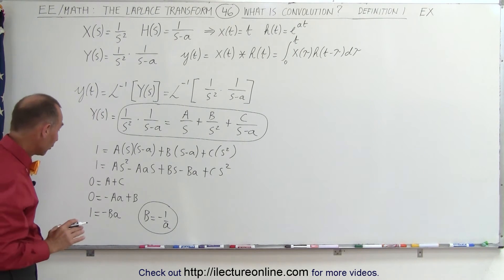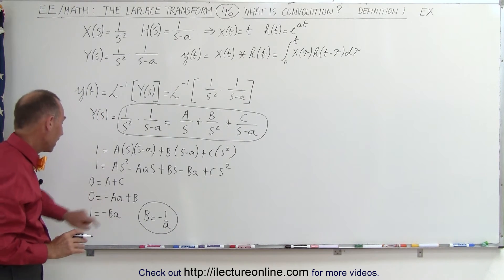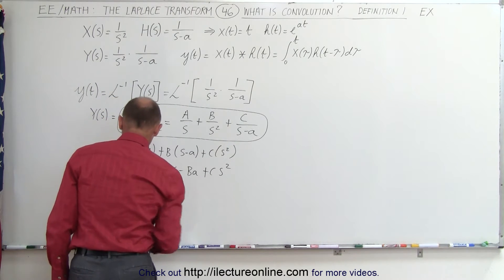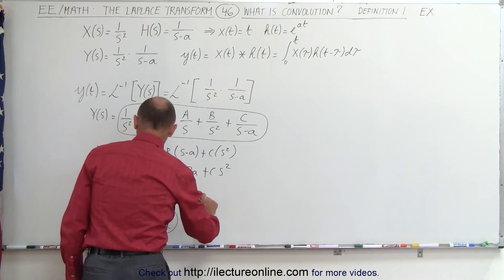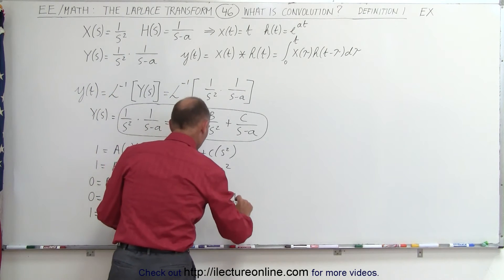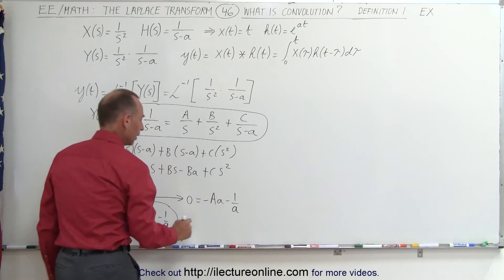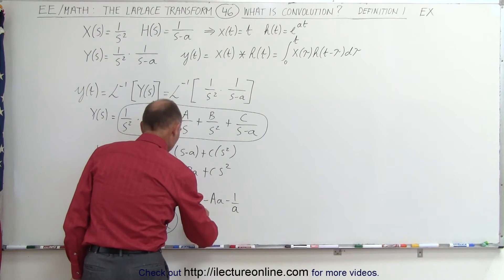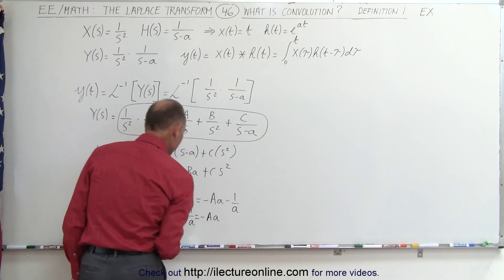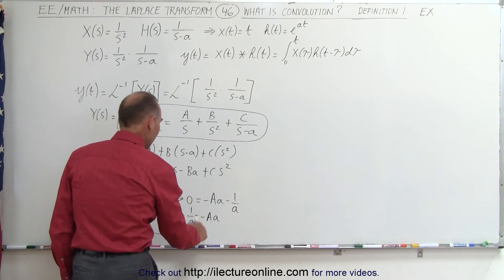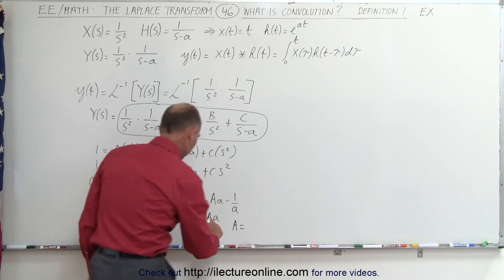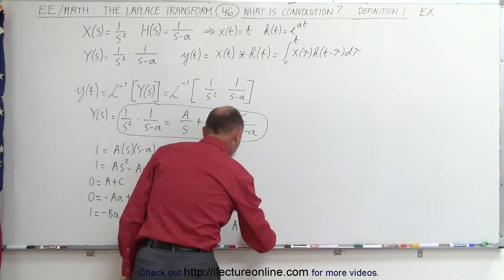If B is minus 1/a, then we can solve for A using the second equation. We have 0 equals minus A·a plus B, which is minus 1/a. Moving terms across, we get 1/a equals A·a, and finally A equals minus 1/a².